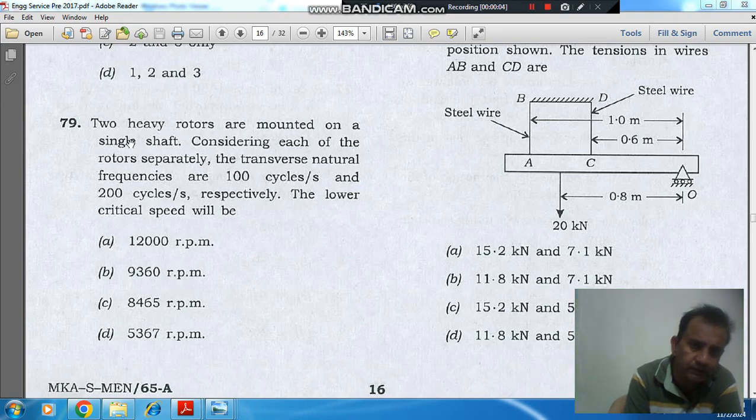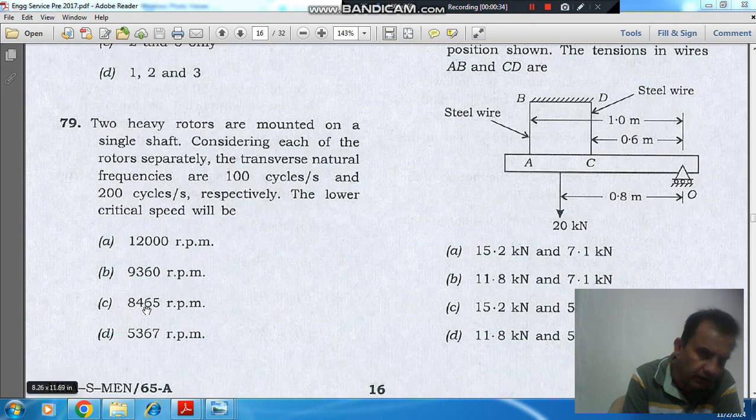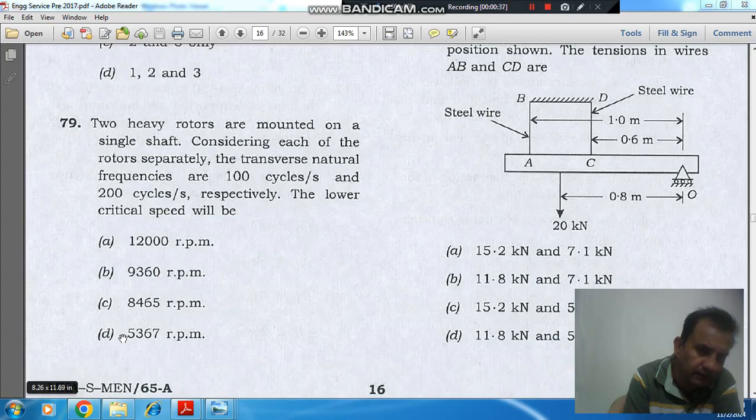Hello, welcome again. We are solving Engineering Mechanics 2017 paper, question number 79. Two heavy rotors are mounted on a single shaft. Considering each of the rotors separately, the transverse natural frequencies are 100 cycles per second and 200 cycles per second respectively. The lower critical speed will be: option a, 12000 rpm; option b, 9360 rpm; option c, 8465 rpm; and option d, 5367 rpm.